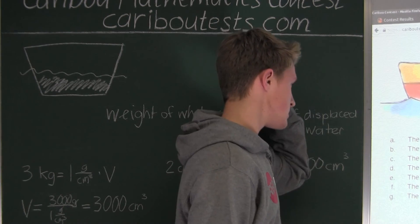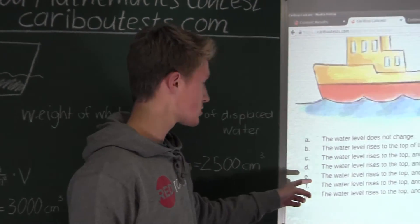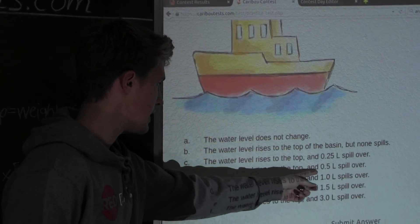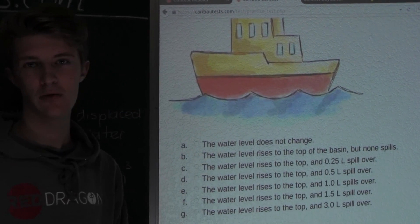And if we look at the options, we can see that the correct option would be option D, the water level rises to the top, and 0.5 L spill over.